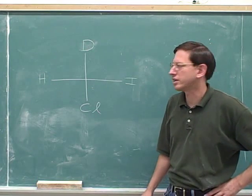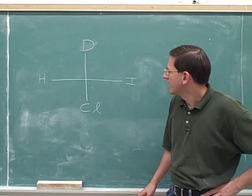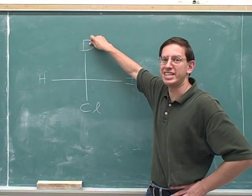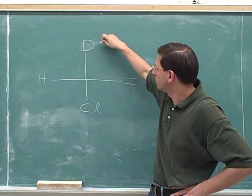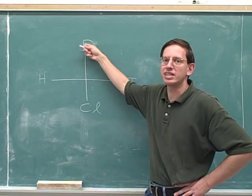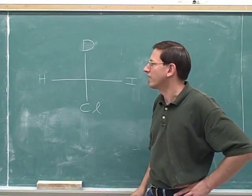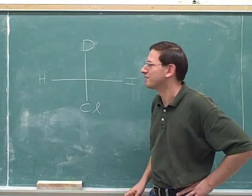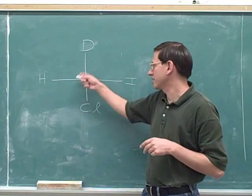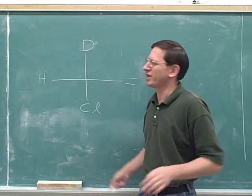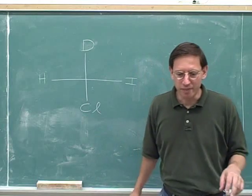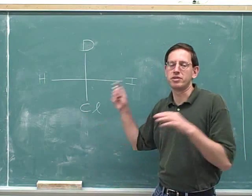Let's determine the configuration of this stereocenter. This up here is supposed to be a D — not an O. For some reason I'm having trouble writing a legible D, but this is supposed to be a D. D is deuterium. So try assigning R and S here — why don't we go through this together? We haven't talked about this issue yet, so this is the first time we've dealt with deuterium.